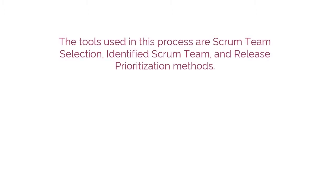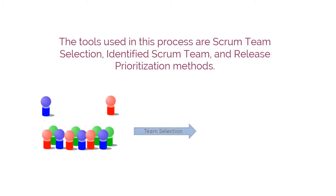The tools used in this process are Scrum Team Selection, Identified Scrum Team, and Release Prioritization Methods. Let's discuss each of them in detail.